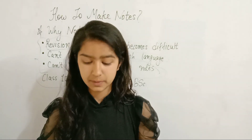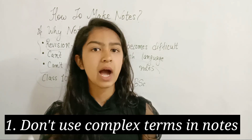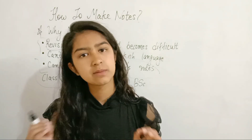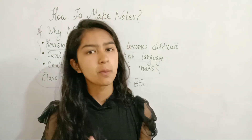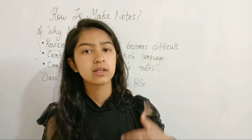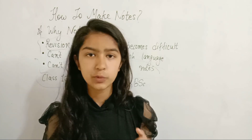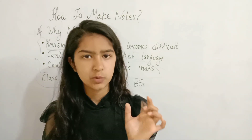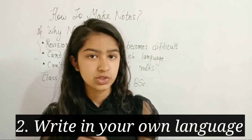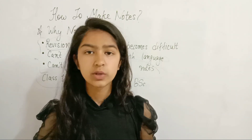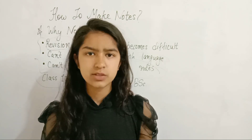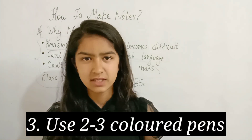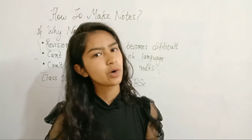To summarize how I make notes: first, don't use complex terms or high-level language that you won't understand later. Write in very simple language. Yes, include important terms that will earn you marks in the exam — for example, terms like 'chemisorption is specific in nature' must be mentioned. After writing those key terms, explain the rest in your own language, because when you revise, it becomes much easier and you don't need to keep re-reading. Also, use two to three colored pens — I find it helpful and my notes look good.